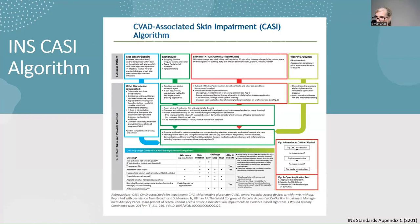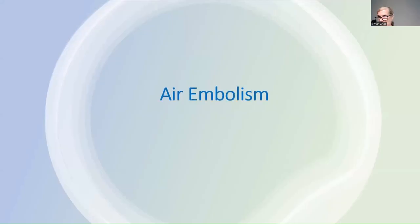There is an algorithm for treating CASSIE included as an appendix in the INS standards — it's an excellent resource. At the bottom there is also a table for which dressings to use for which type of impairment.